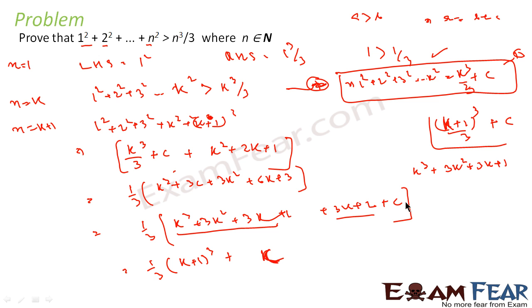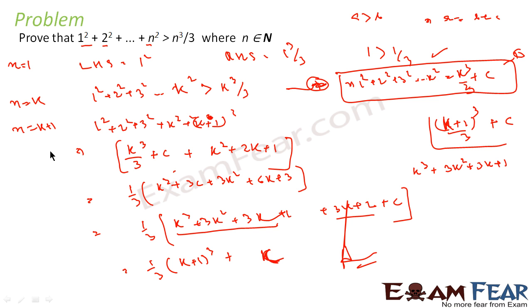This can also be written as 1 by 3 times (k plus 1) whole cubed plus some constant — because the remaining terms combined are also a constant. And that is exactly what we had to prove. So we have proved it. Here n equal to 1 is true, n equal to k is assumed, and n equal to k plus 1 is proved to be correct.